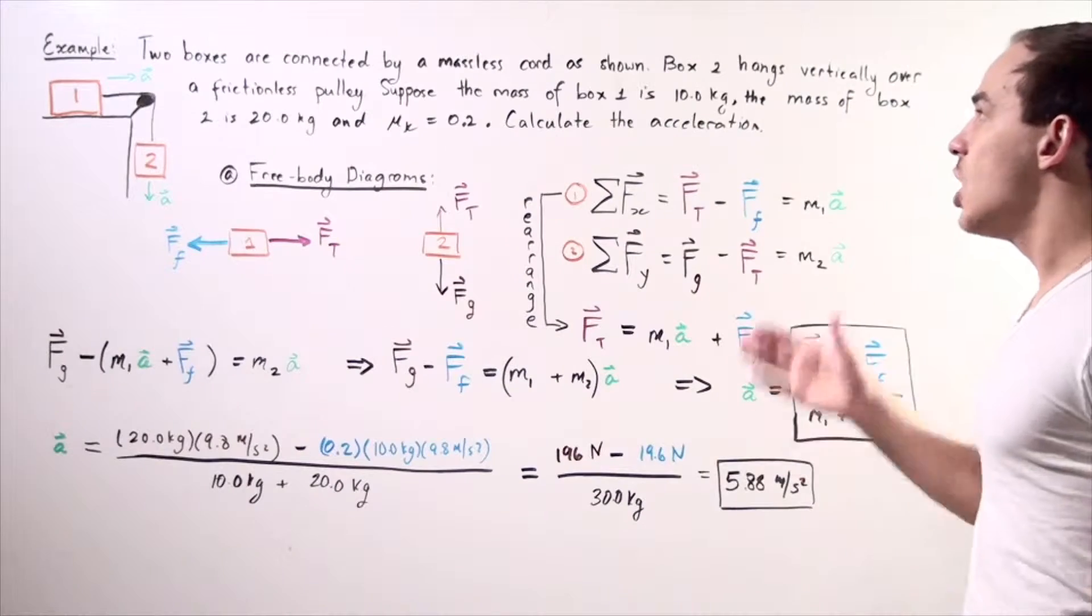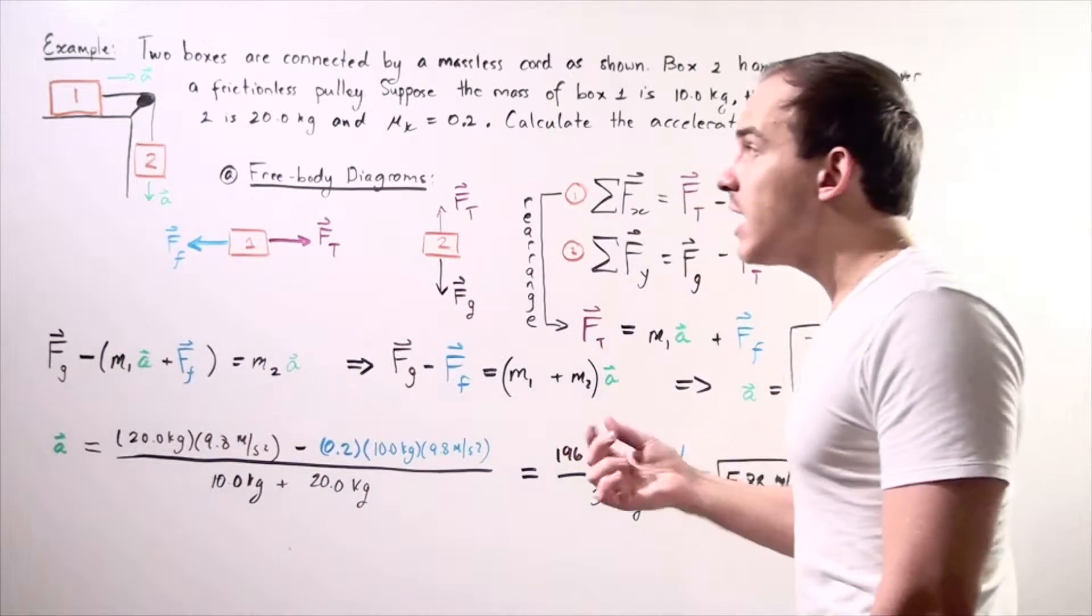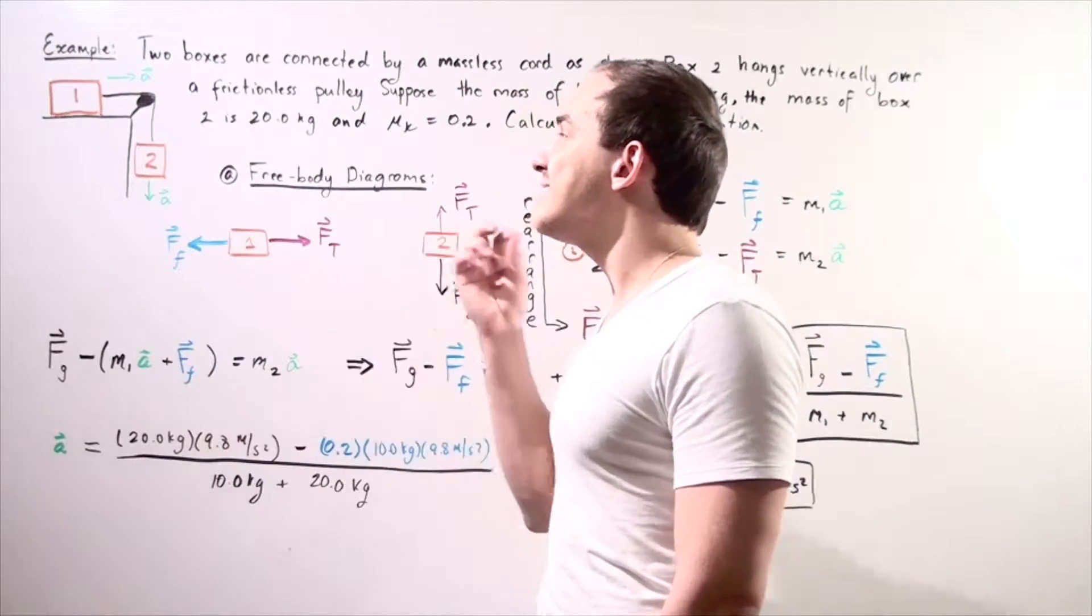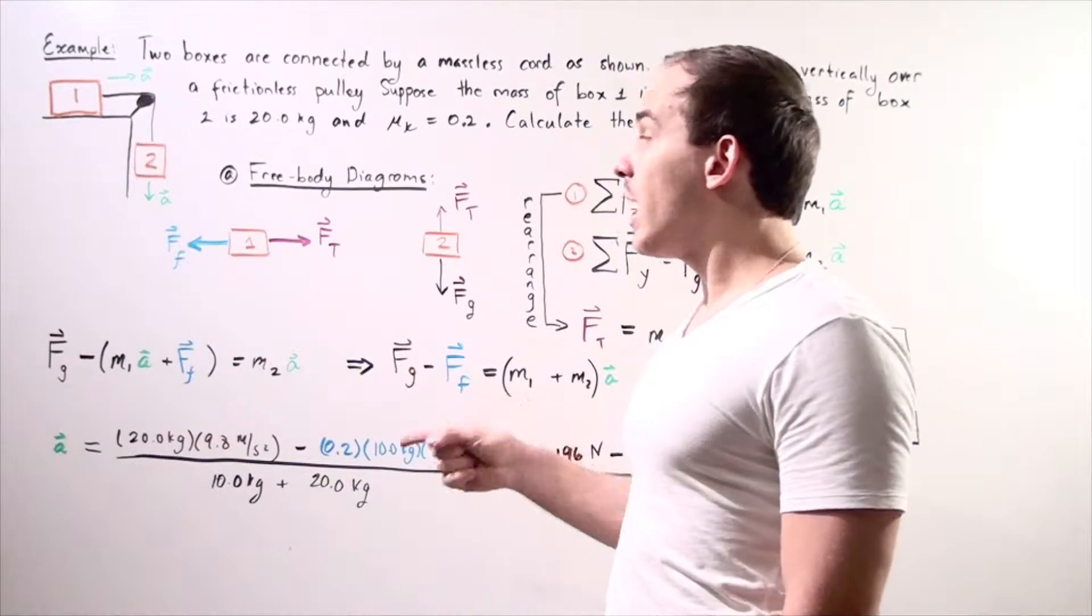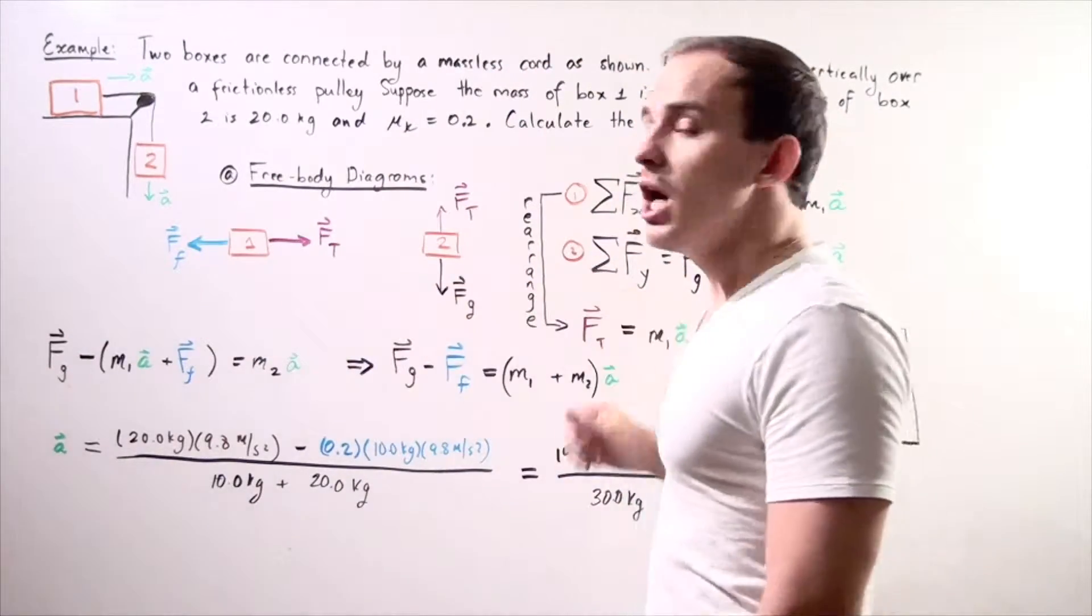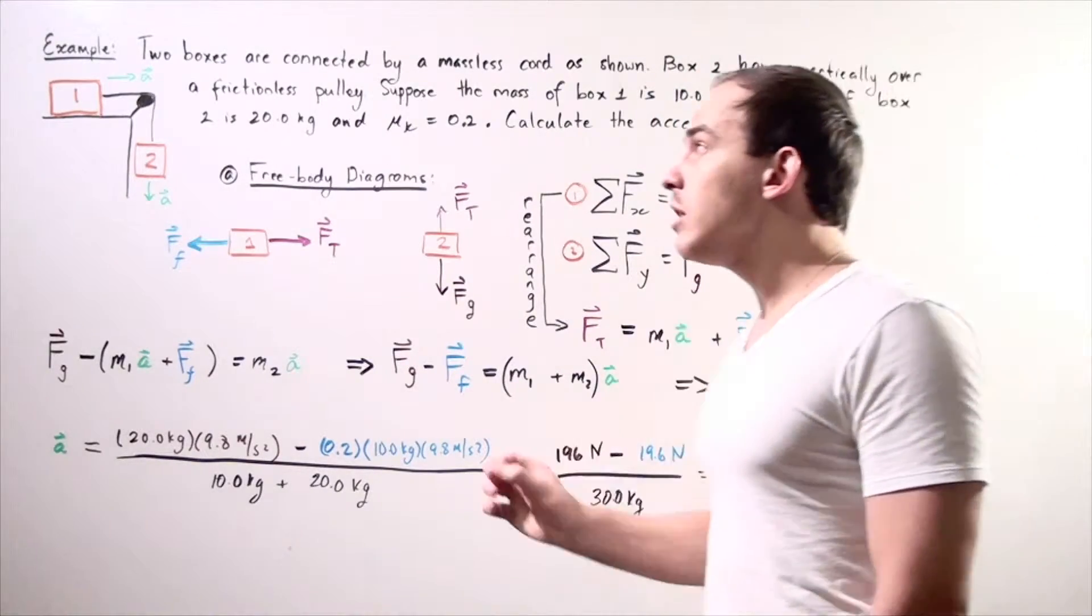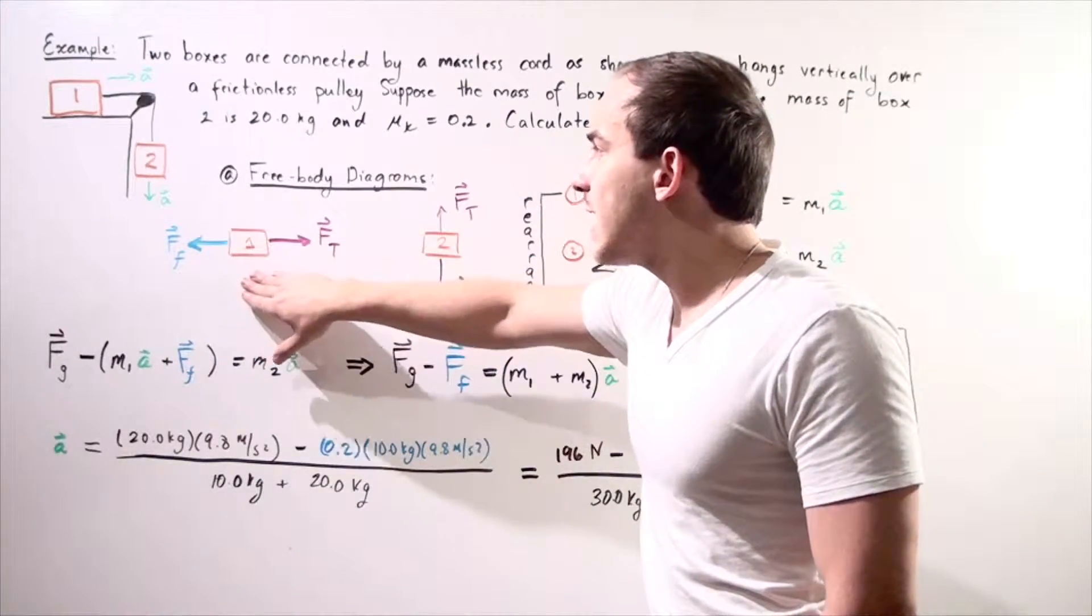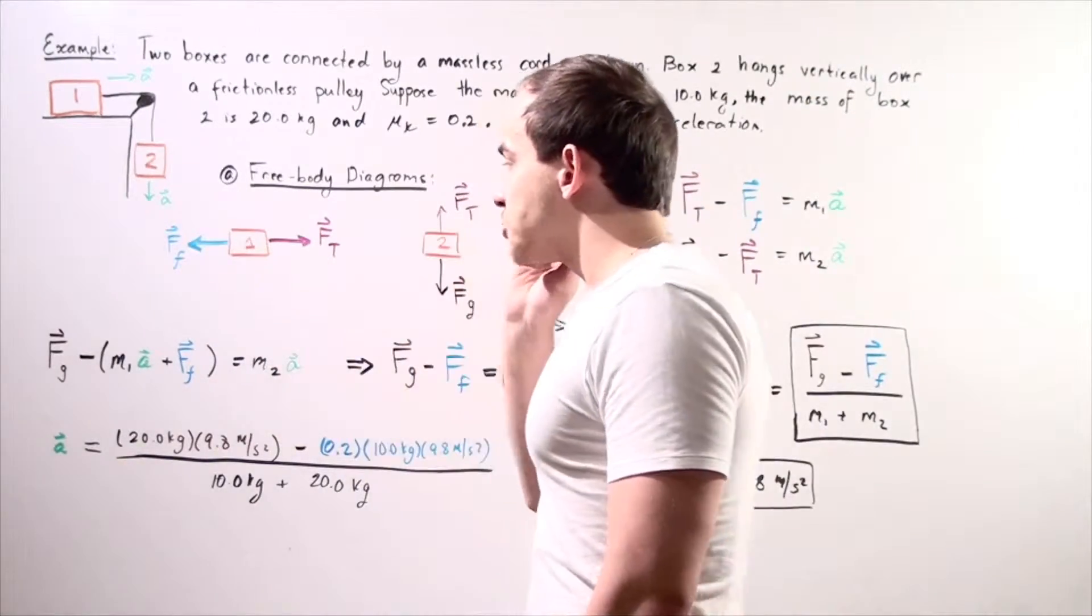We want to calculate what the acceleration of box one and box two is. Because these boxes are connected by a cord, their acceleration, the magnitude will be exactly the same. Box two will accelerate downward along the y axis and box one will accelerate in the positive direction along the x axis. We begin by labeling all our forces on box one and box two. The free body diagram for box one and the free body diagram for box two. Let's begin with box one.